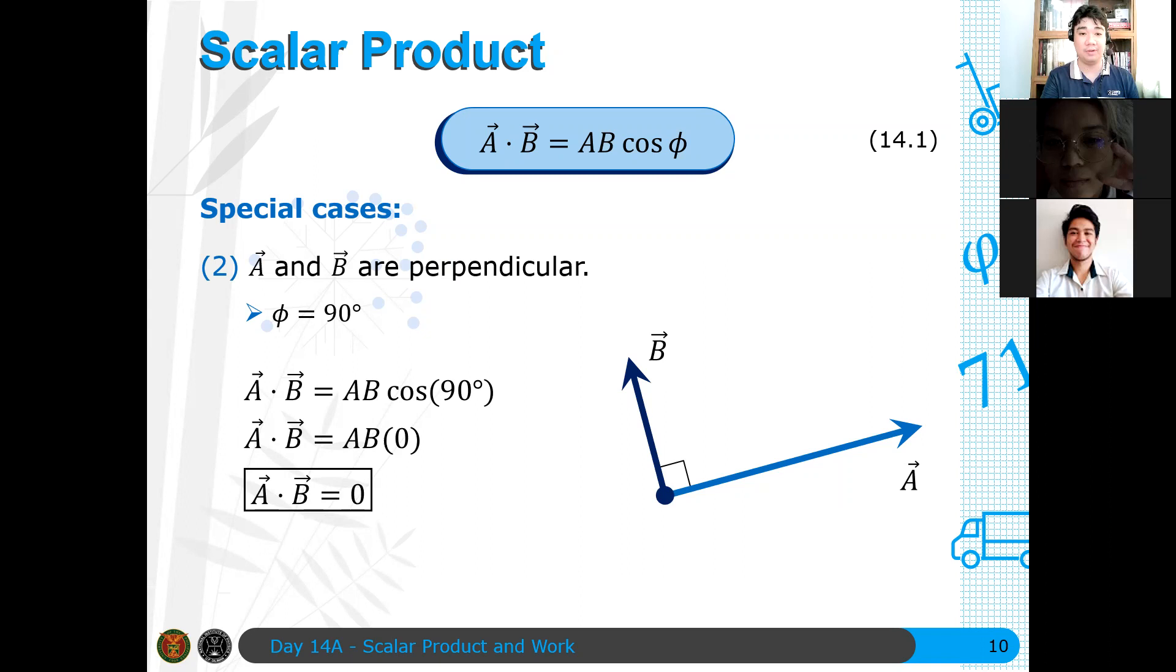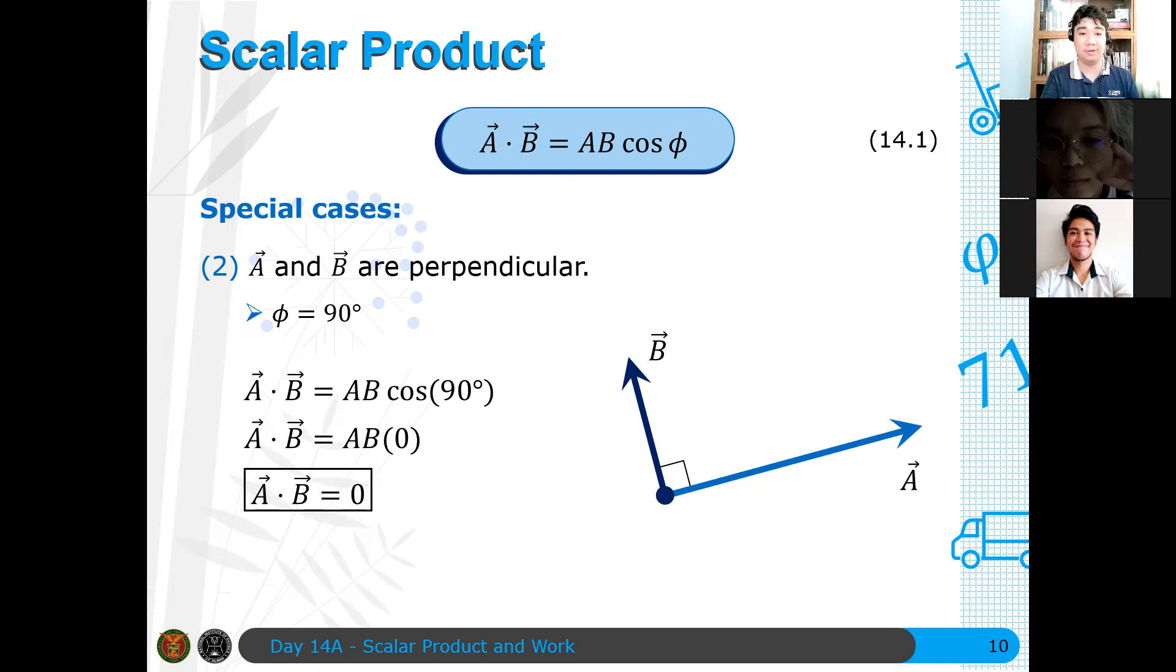Now, what if they are anti-parallel? For example, there, the angle now between them is 180 degrees. It may be in opposite direction. And we know that for anti-parallel vectors, a is just some negative b multiplied by some scaling. So, in that case, phi is 180 degrees. And therefore, the dot product is simply the negative of the magnitude of a multiplied by the magnitude of b. So, a dotted with b is minus ab.